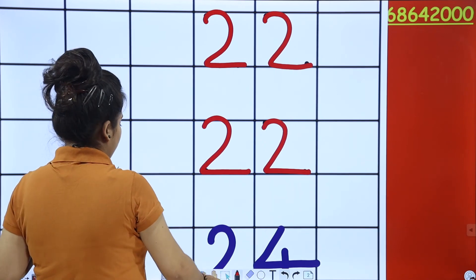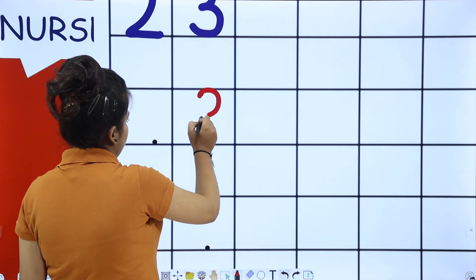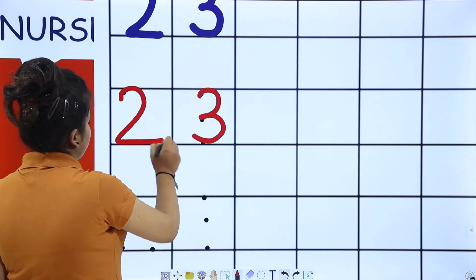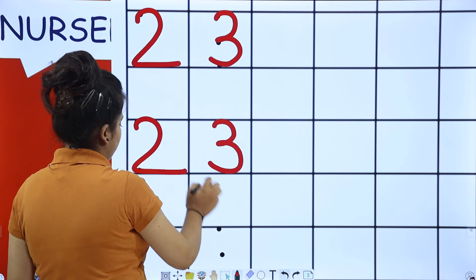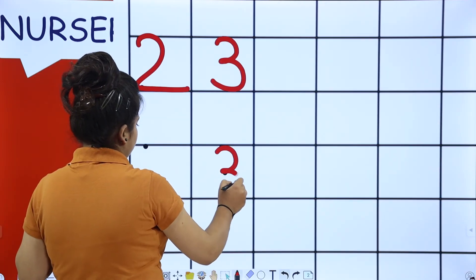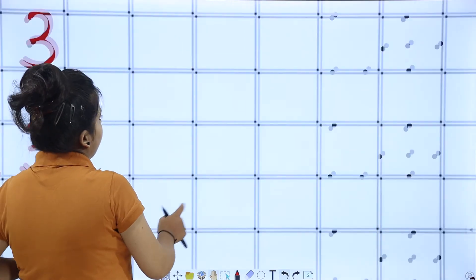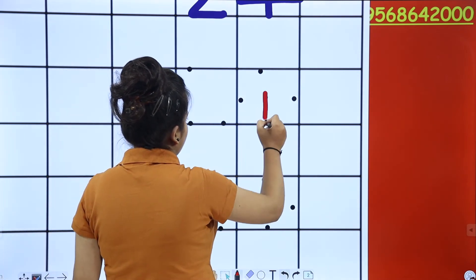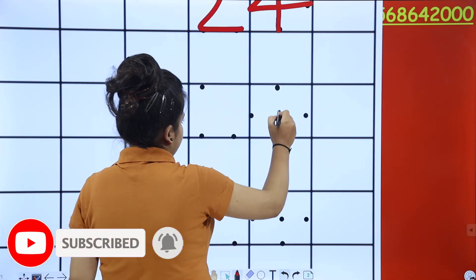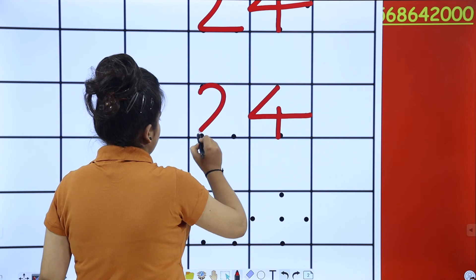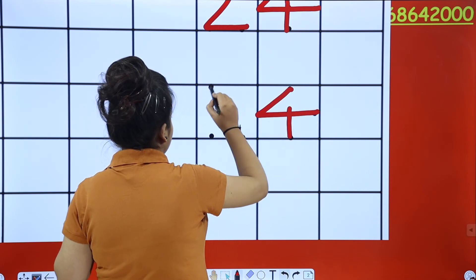And the next one is 23. What comes after two? Three — and two is the common number because we are in the twos line. Two, three: 23. And the last one is 24. Two, four: 24.